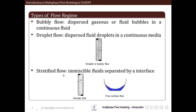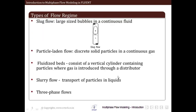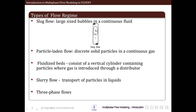In stratified flow we have immiscible fluid separated by an interface — for example, annular flow where immiscible fluids are separated by a distinct interface. Free surface flow is also shown here, where two distinct fluids are separated by an interface which is generally a free surface, with air above and a fluid at the bottom. Next is slug flow, where we have large-size bubbles in a continuous fluid. It differs from bubbly flow because the size of the bubbles is very large.